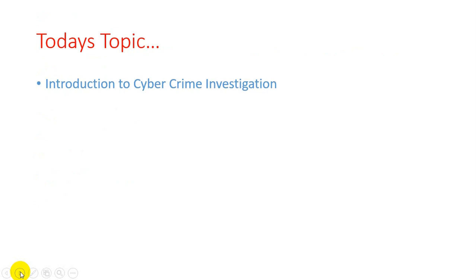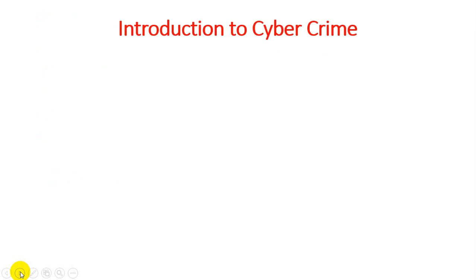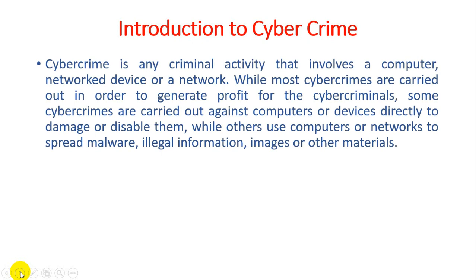We will start with cybercrime investigation — first, what is cybercrime and what are the different things covered under cybercrime. Cybercrime is a criminal activity that involves a computer, network devices, or a network. Whenever we perform some illegal activity with the help of any electronic device as well as a network or internet, that concept is covered under cybercrime. So when we discuss cybercrime, we know we are using two different components: a computer as well as the internet.